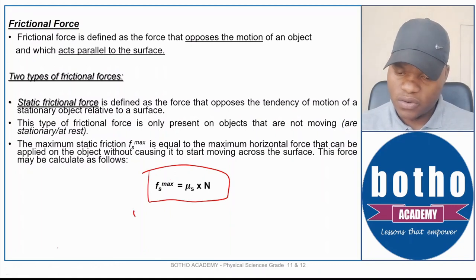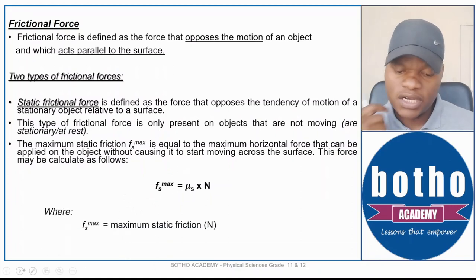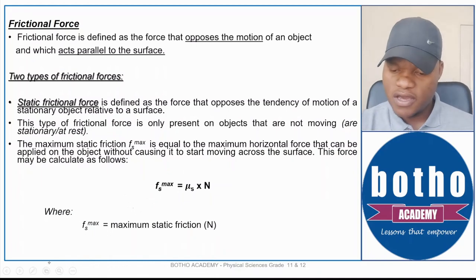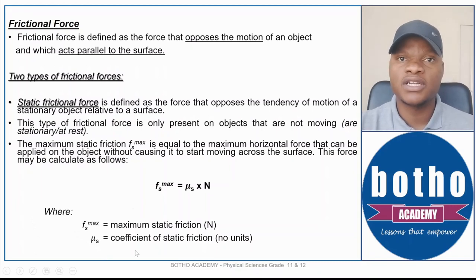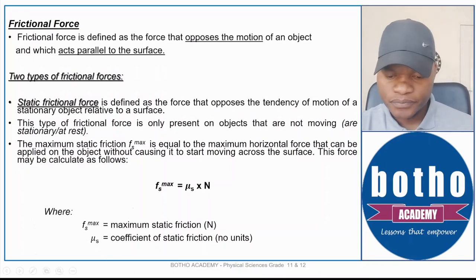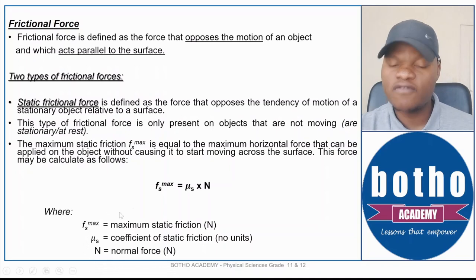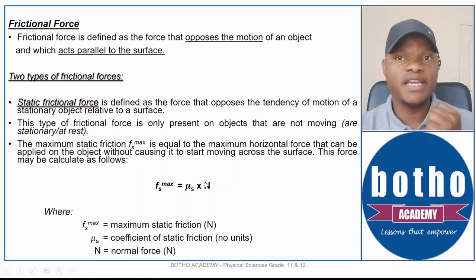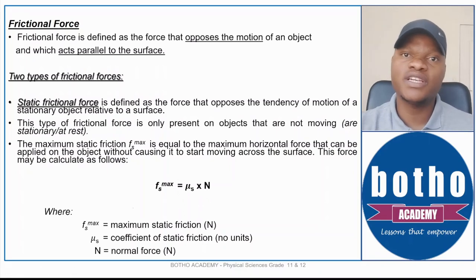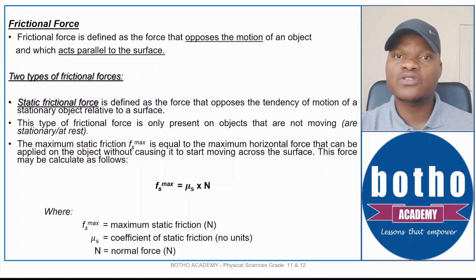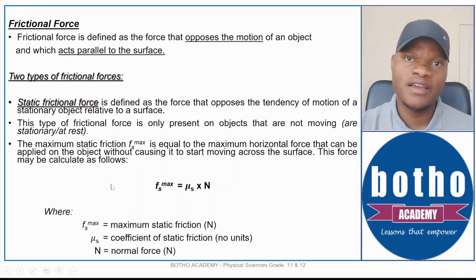The maximum static frictional force is calculated using the formula: fs(max) = μs × N, where fs(max) is the maximum static frictional force measured in newtons, μs is the coefficient of static friction (a dimensionless ratio with no units), and N is the normal force. This shows the relationship between the normal force and the frictional force — understanding these relationships is important before learning the laws.